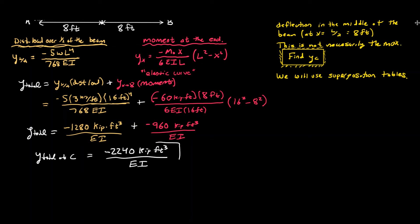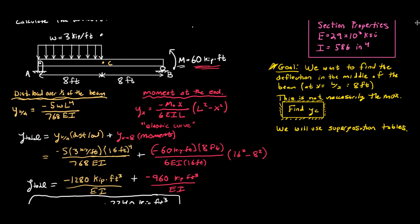So that's going to be our answer in general form — the deflection at point C is negative 2240 kip·ft³ over EI. In reality the beam would deflect downward, with the maximum probably somewhere to the left, but we're specifically looking for point C.